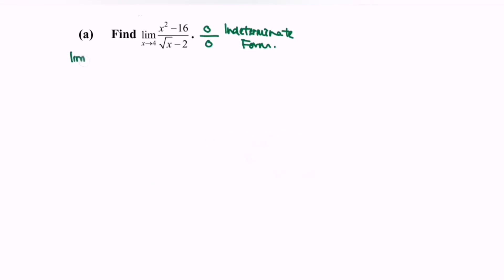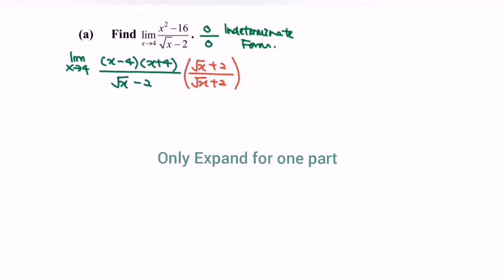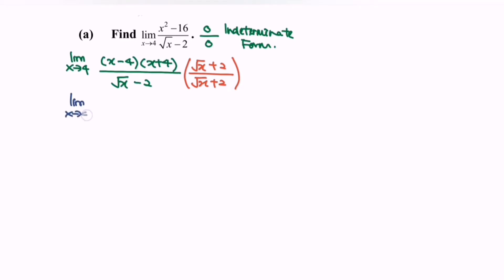So the limit when x approaching 4 for (x minus 4)(x plus 4) over (square root of x minus 2). Do remember to multiply with the conjugate, where we have (square root of x plus 2). Next, what we have to do is to expand the situation — only expand for one part. I'm going to focus on the denominator: limit when x approaching 4 for (x minus 4)(x plus 4) multiplied with (square root of x plus 2).